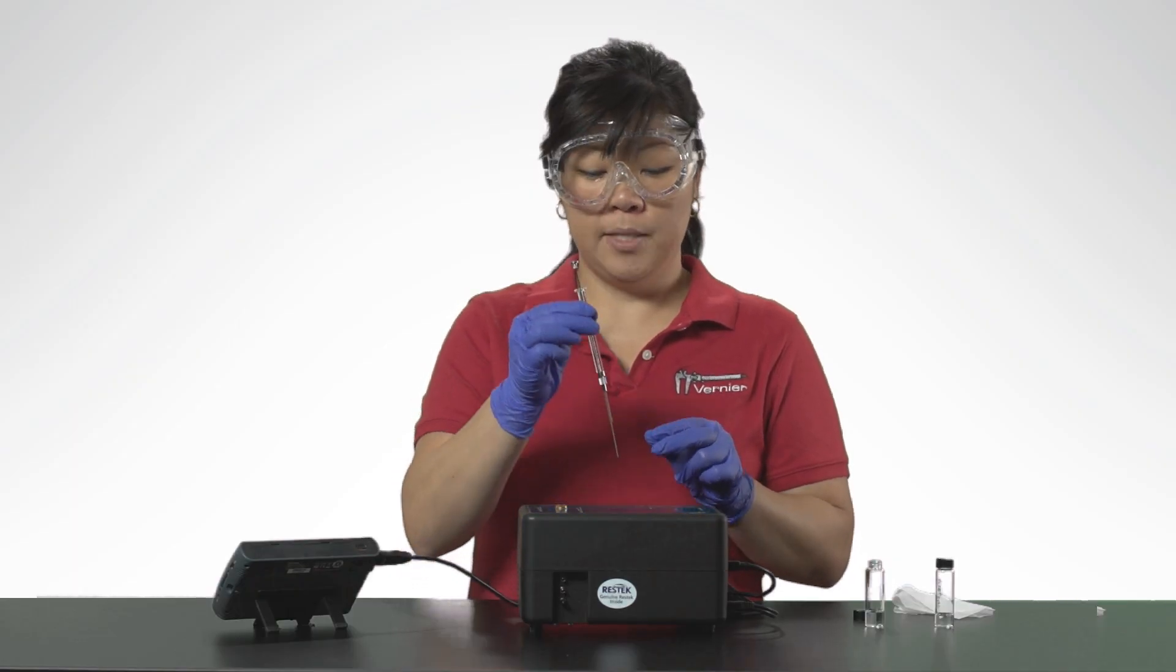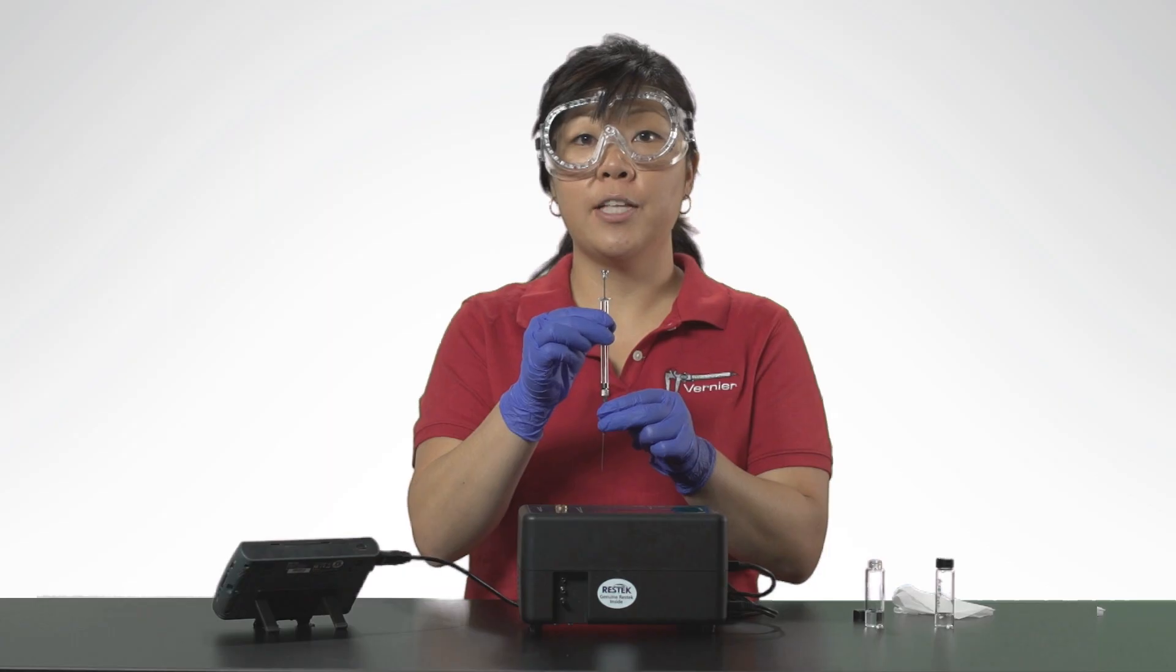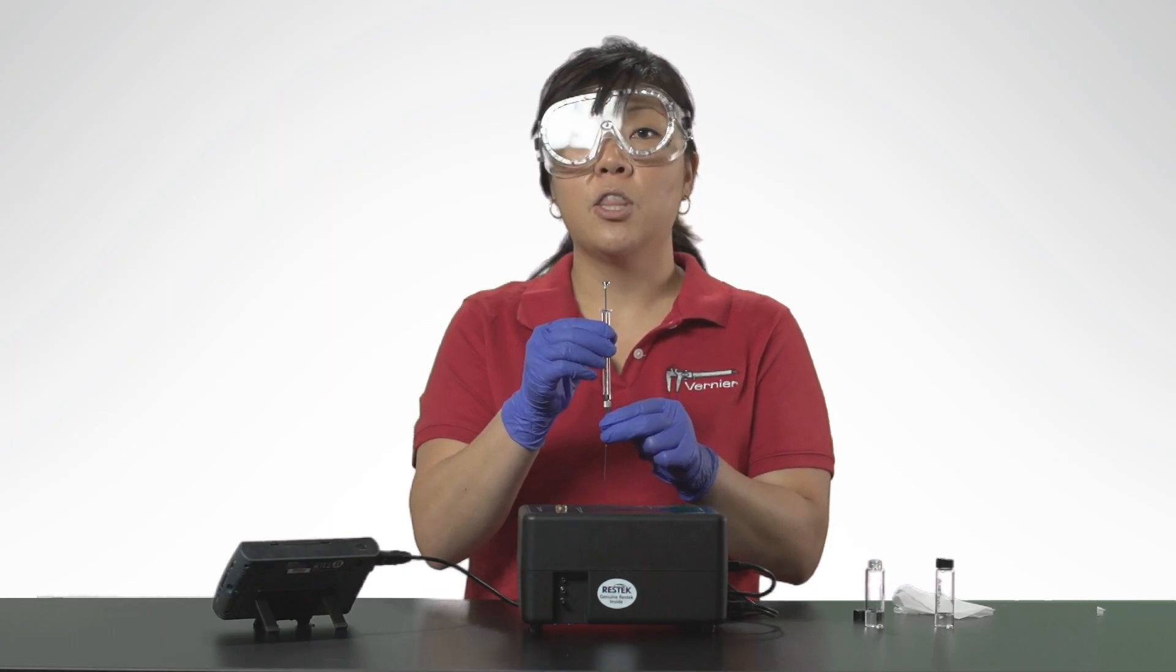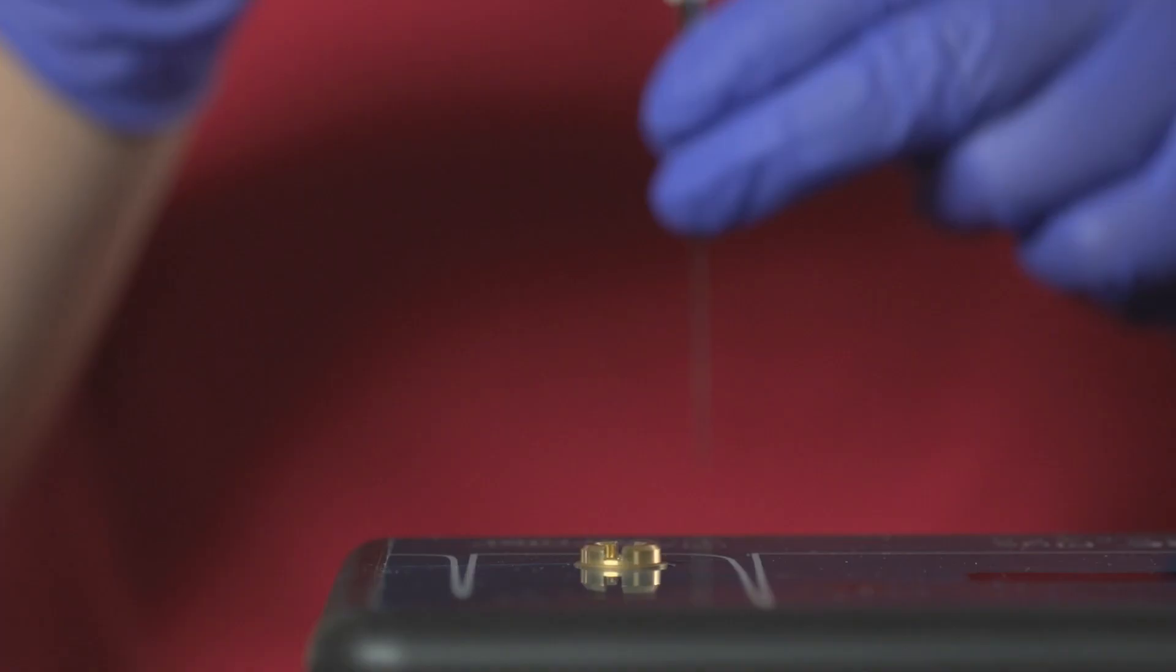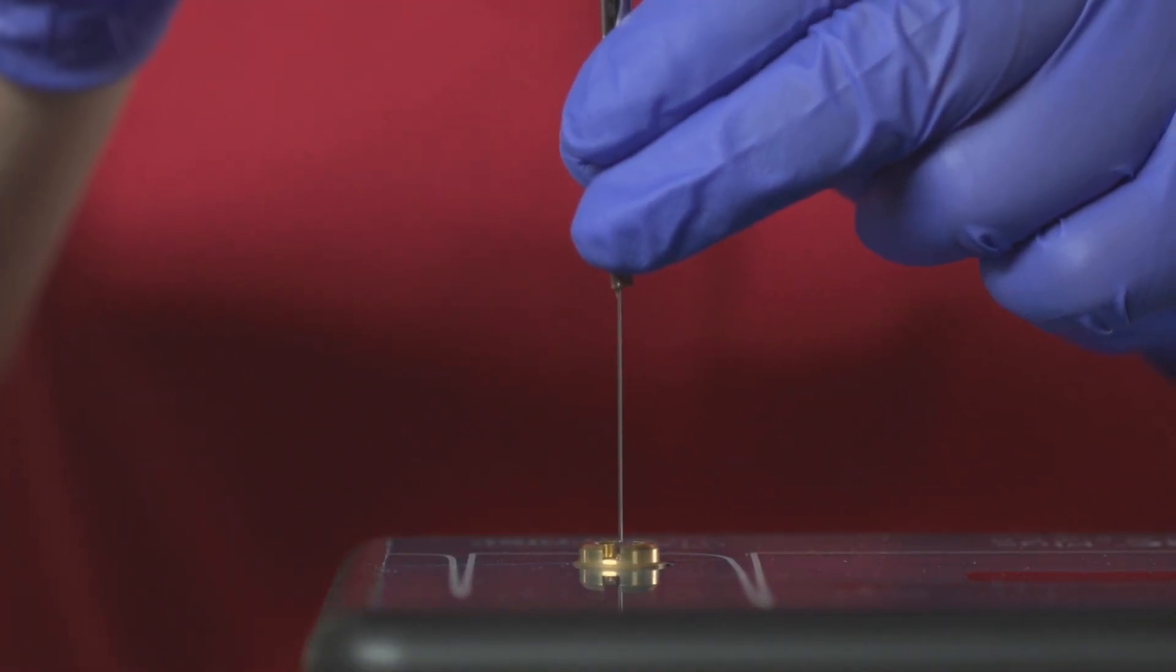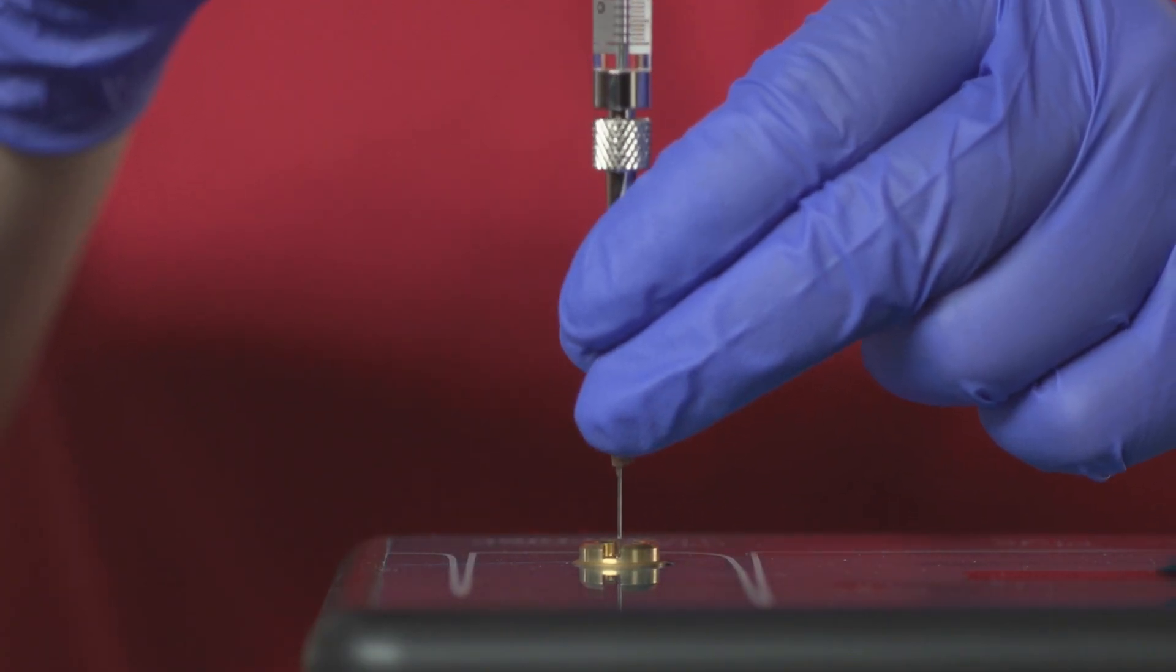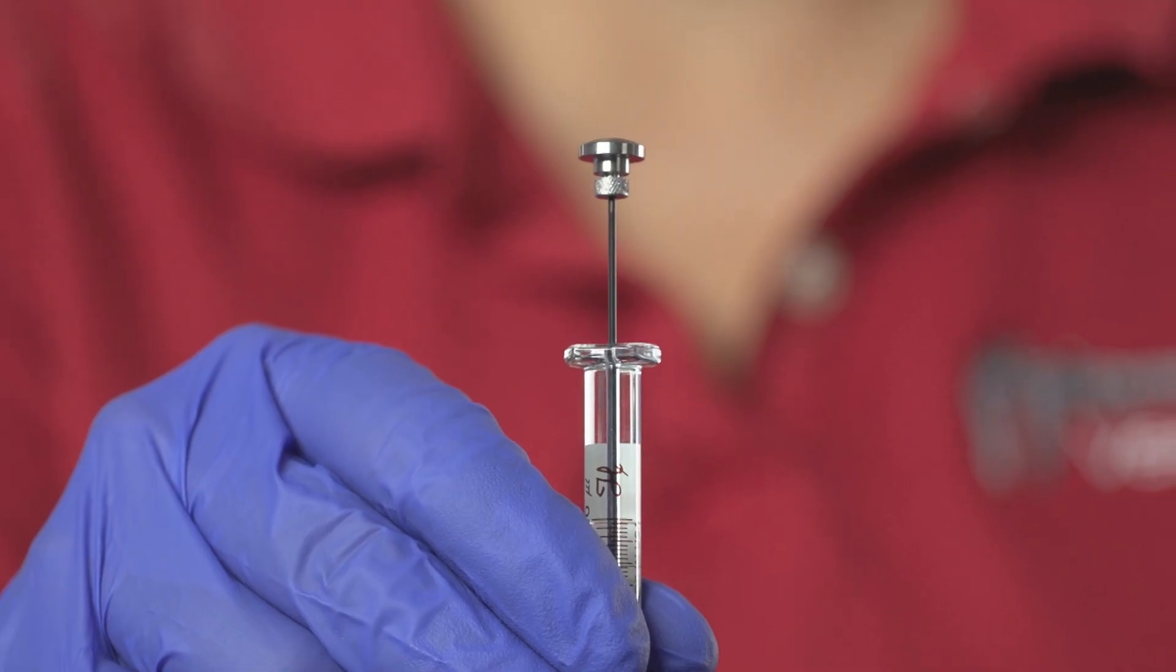Hold the syringe with one hand. Steady the needle with the other hand supporting the needle guard and the lower part of the needle with two fingers to prevent the possible bending of the needle. Insert the needle into the injection port until the needle stop is fully seated. If the needle sticks, rotate it slightly while inserting. Do not move the plunger yet.